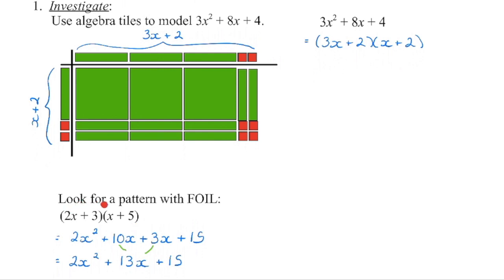We multiply the first terms in each bracket together to get the 2x squared. We take the outside terms on each bracket and multiply those together to get the 10x. We take the inside terms on each bracket, multiply those together to get the 3x, and then multiply the last term in each bracket together to get that 15. When you combine the like terms together, we're going to get that 13x. We're now going to be given a trinomial, and we're going to do the opposite process where we are creating brackets in order to come up with the factors.